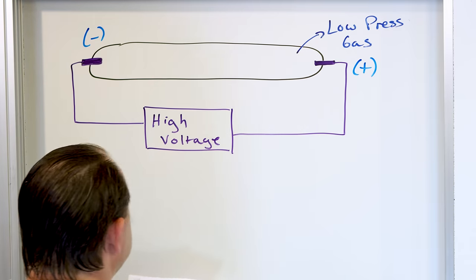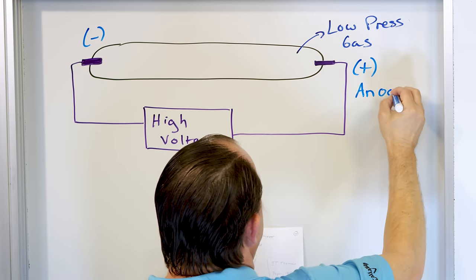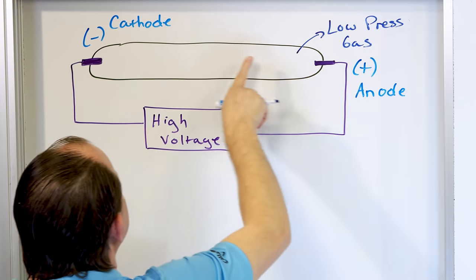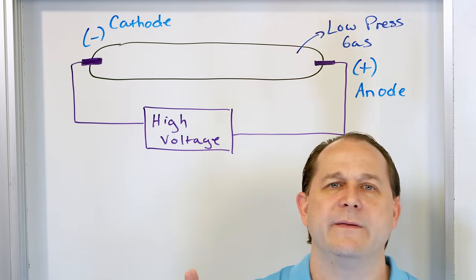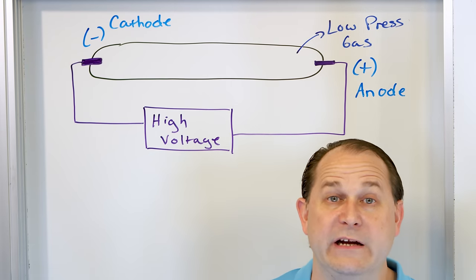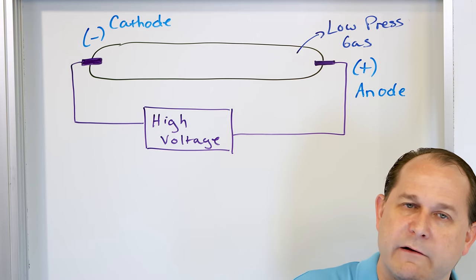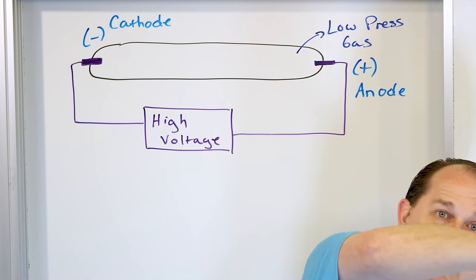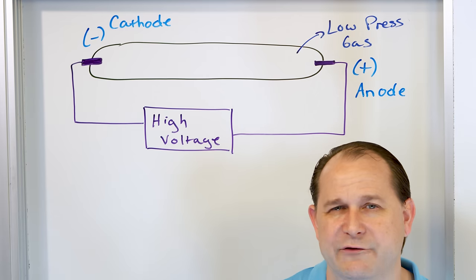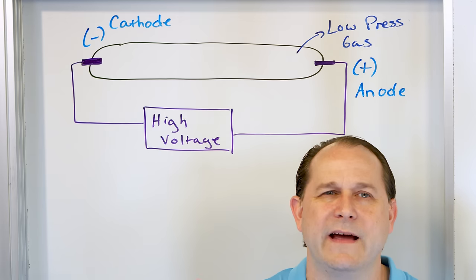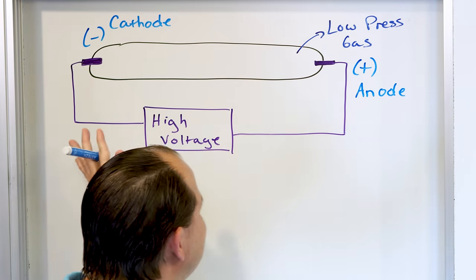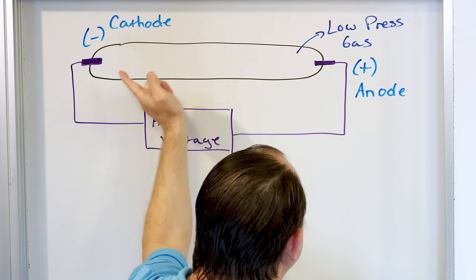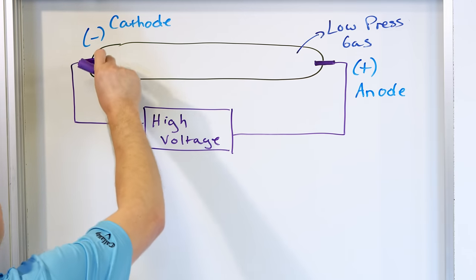The positive terminal is called the anode and the negative terminal is called the cathode. I want to caution you not to get too hung up on those words because the definitions for anode and cathode can change depending on what you're doing — whether you're charging or discharging a battery, or whether you're talking about electron flow versus conventional current. All I want you to know is that this is the negative terminal where electrons come out, and here is the positive terminal.